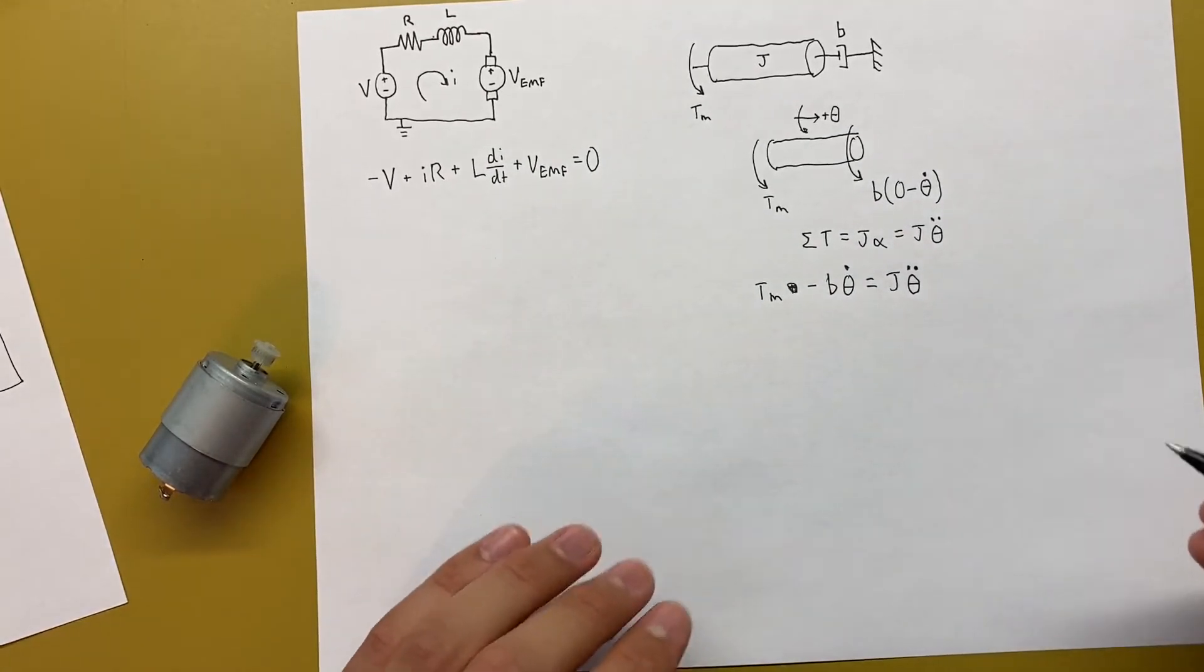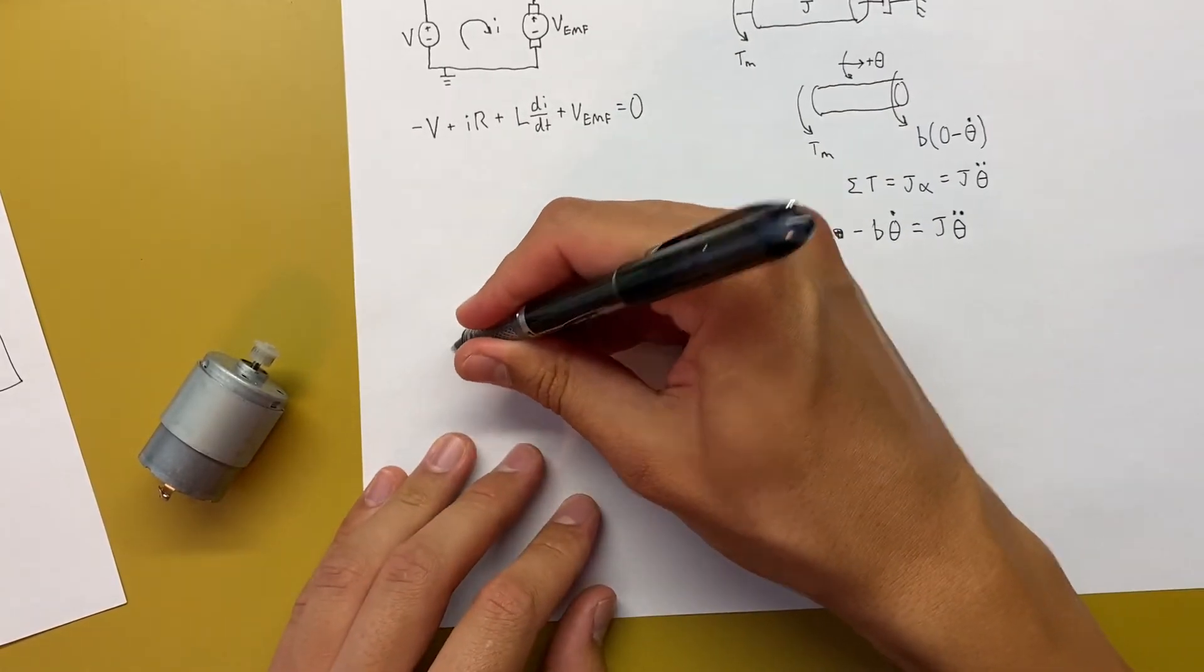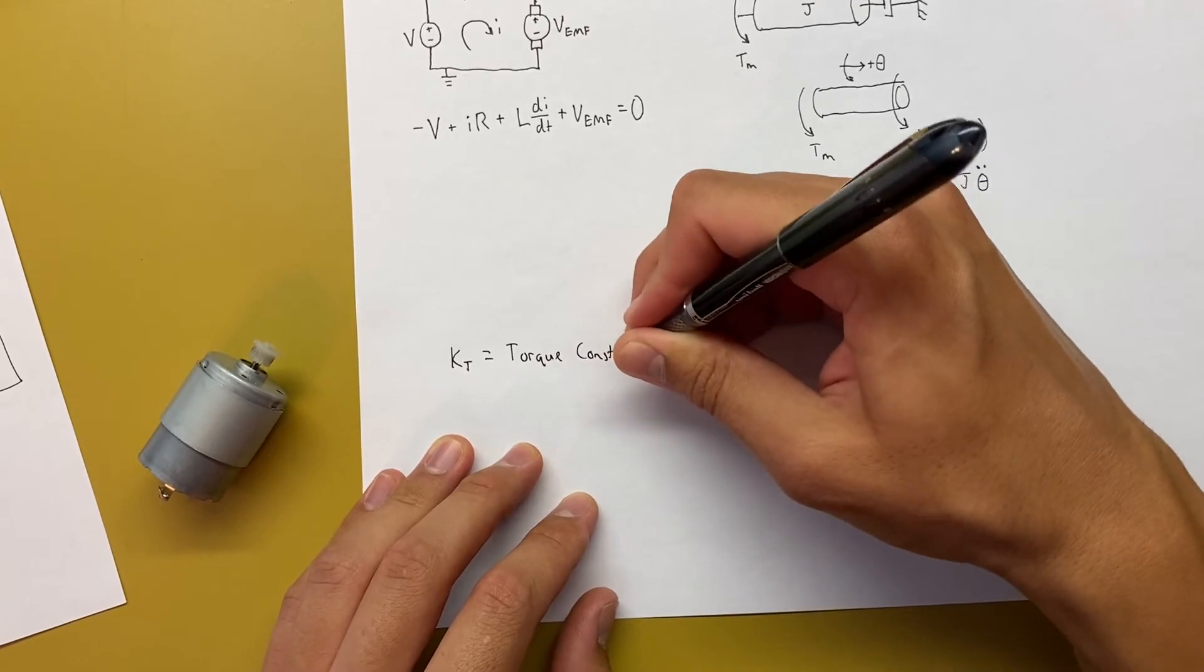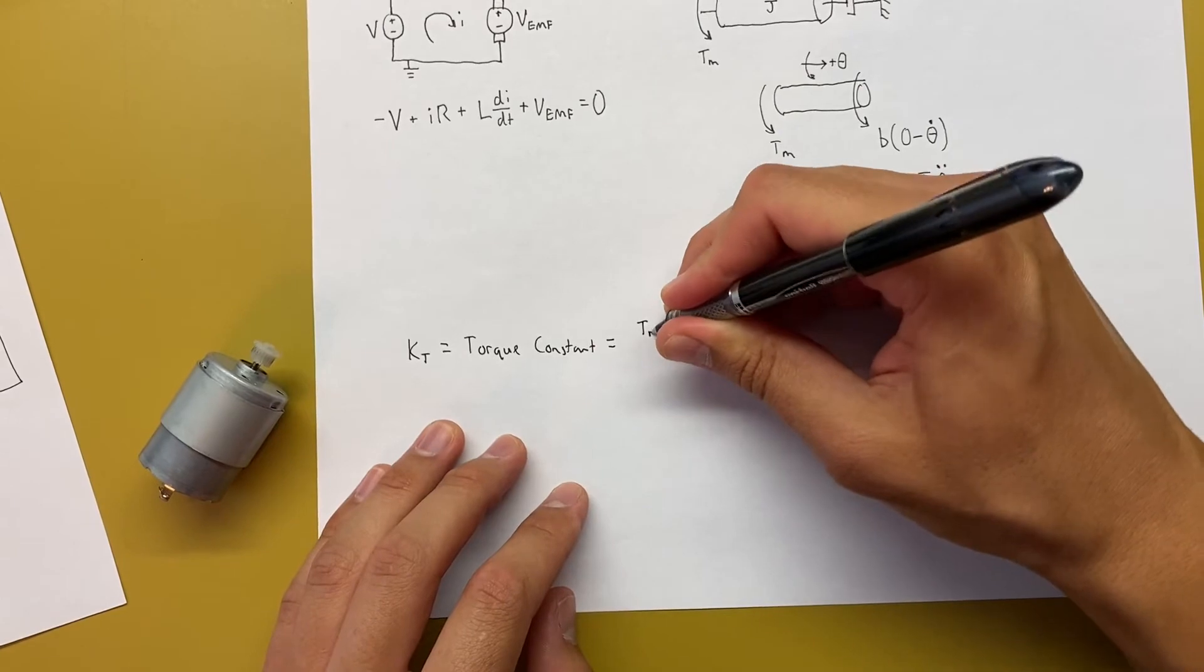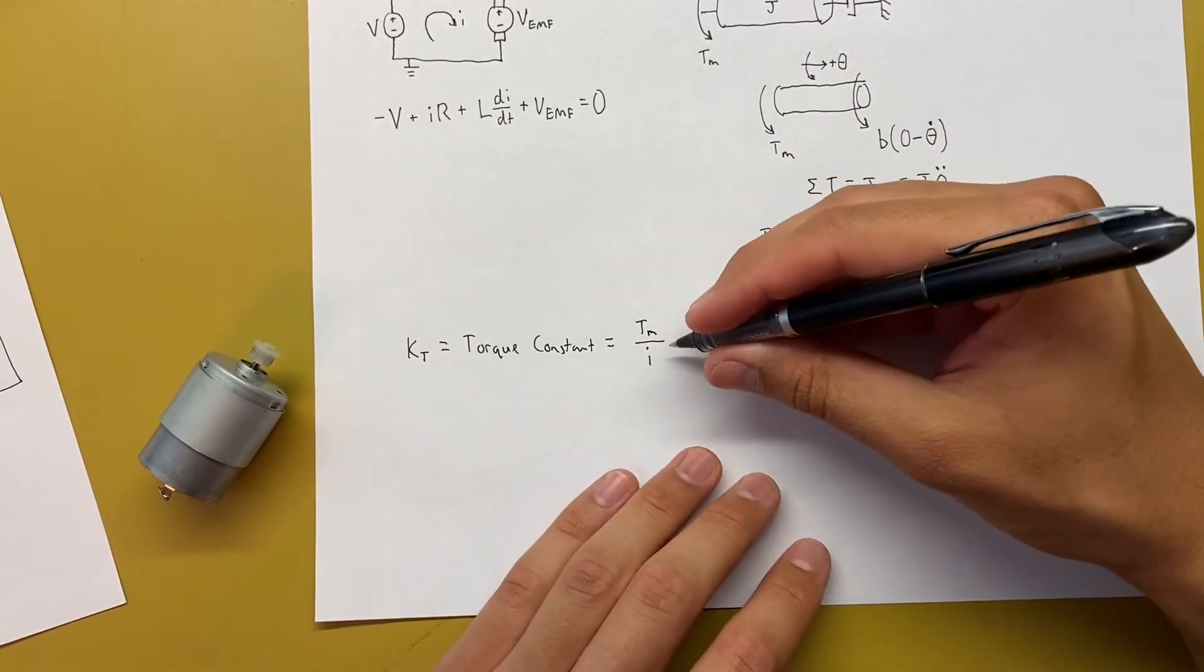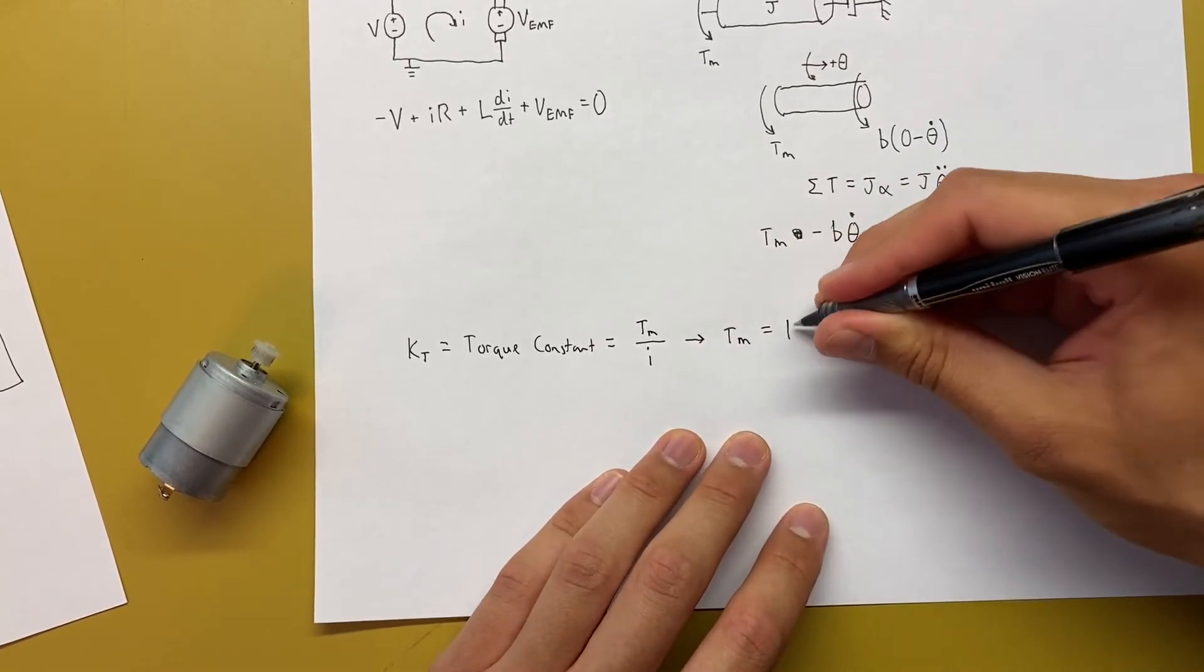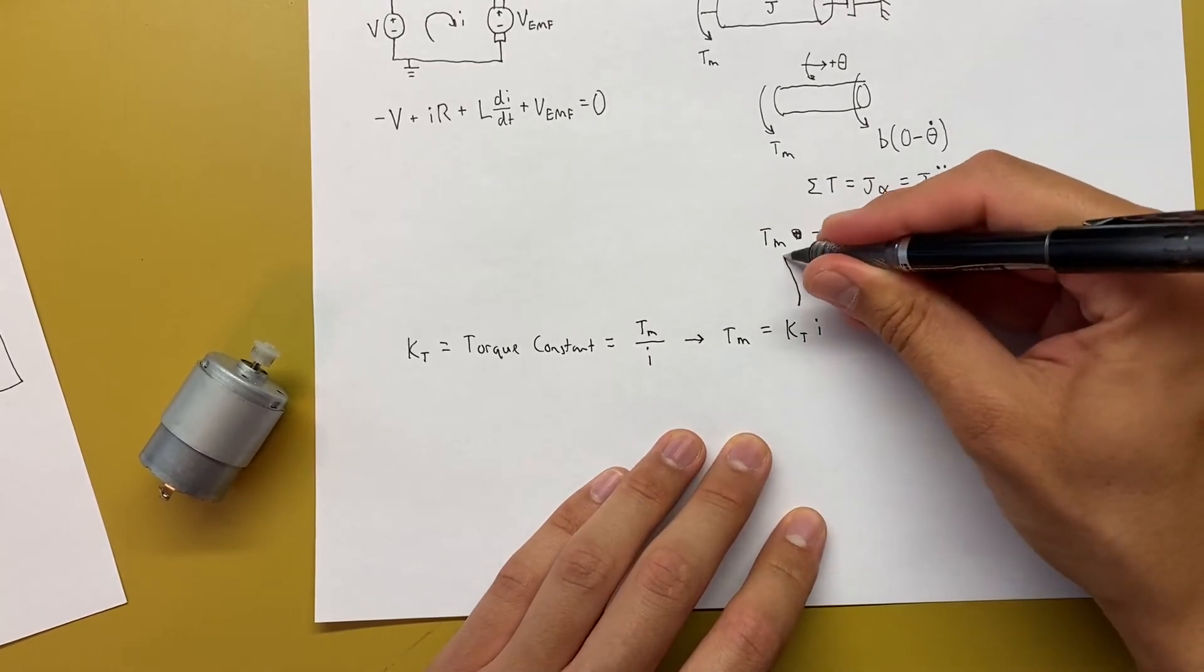So what we need to know is a couple of constants about our motor. The first one is called KT, or the torque constant. And that is defined as the torque of the motor over the current that's going through the circuit. So from this relationship, we can figure out that TM, the torque of the motor, is equal to KT times I. And then we can go ahead and plug that into here.